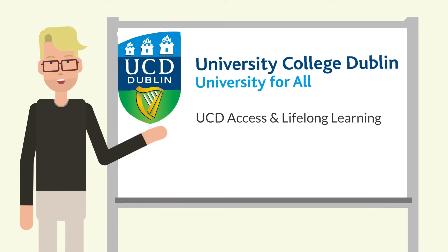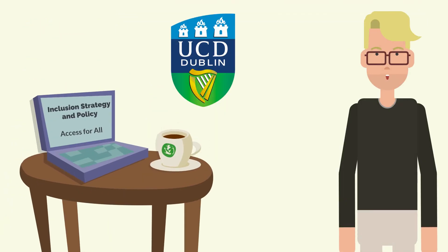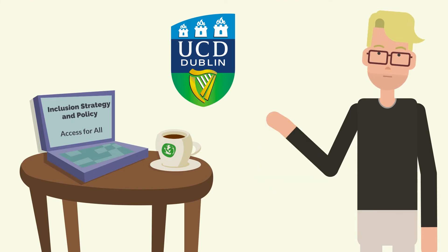Led by UCD Access and Lifelong Learning, University for All is UCD's unique, whole institutional approach to embedding inclusion. We have a strong foundation for inclusion in our strategies and policies, and we're implementing University for All across what we call the four pillars of the institution.